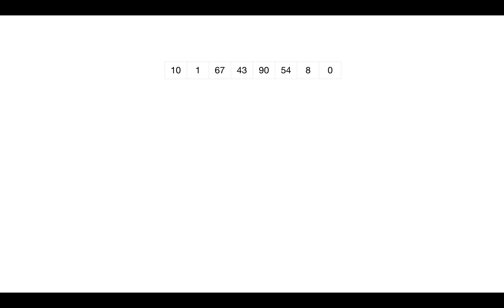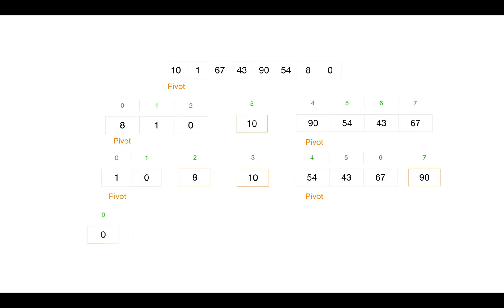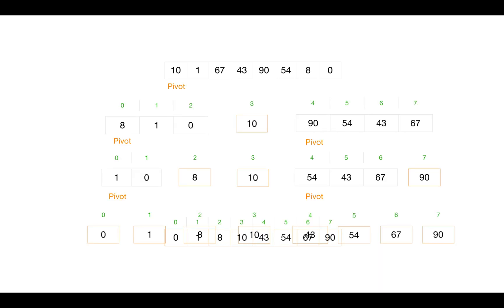The last step is combine. Once the conquer step recursively sorts all sub-arrays, all elements get sorted. That's because we're not creating different arrays for partitions — rather, we are rearranging elements in the same array considering the partitioning indexes.